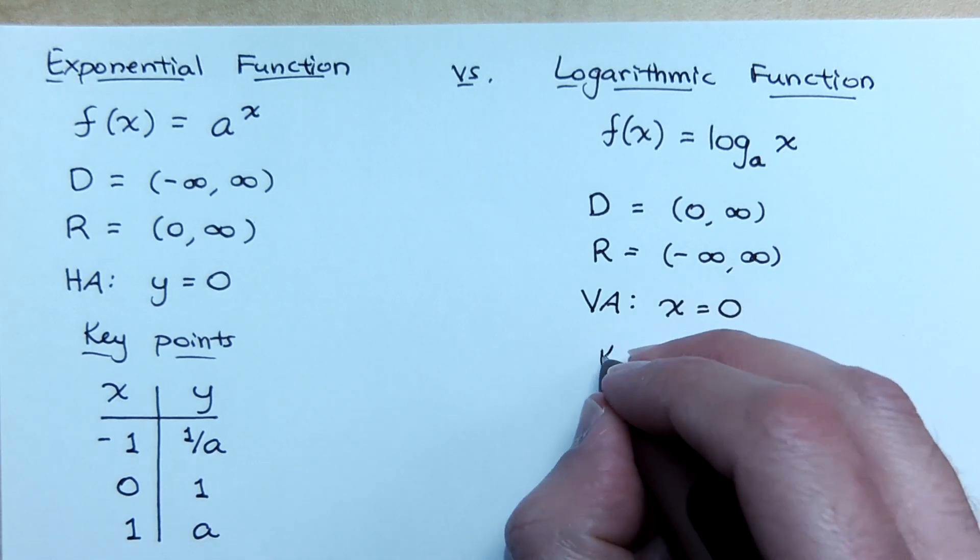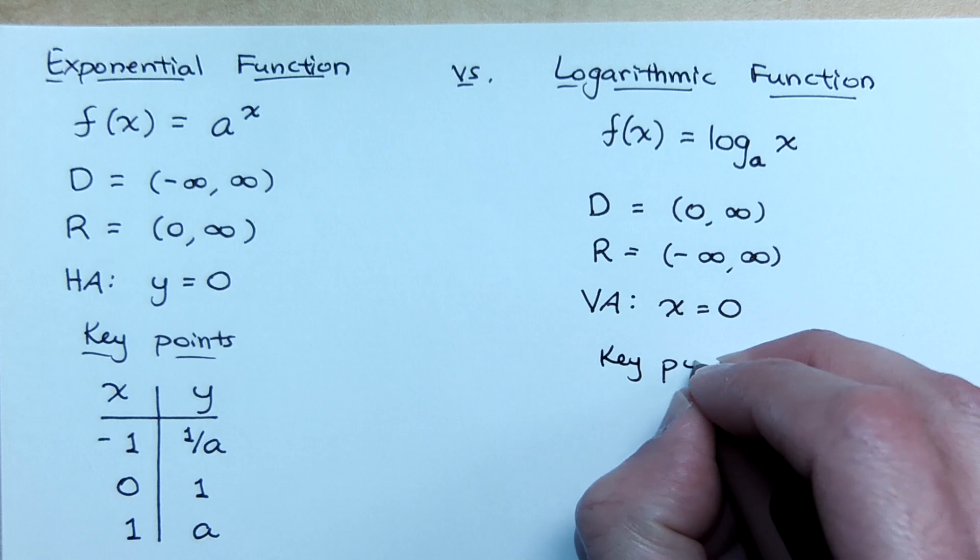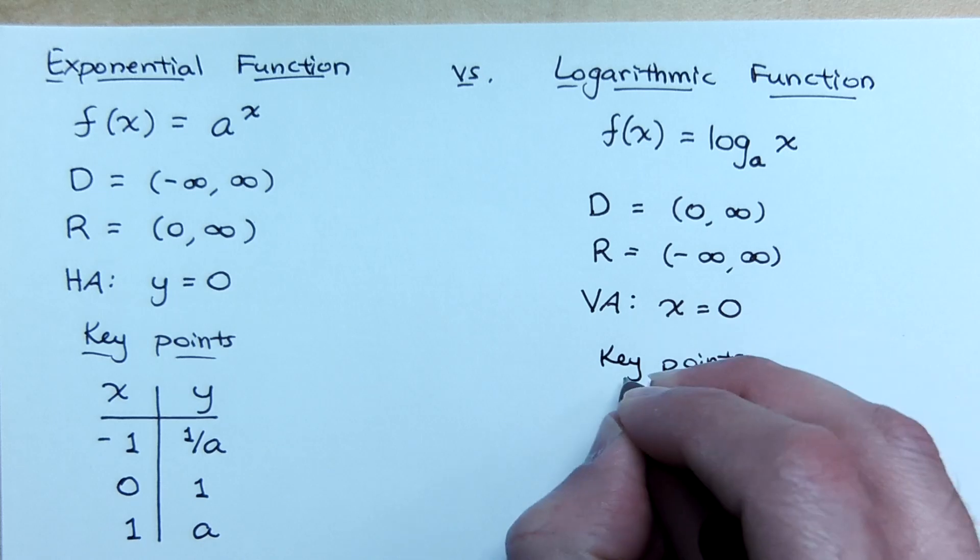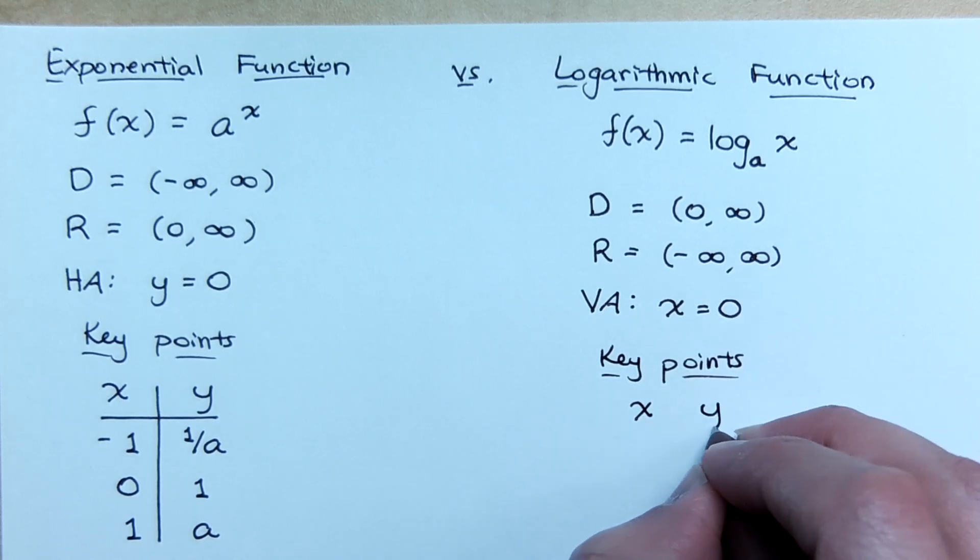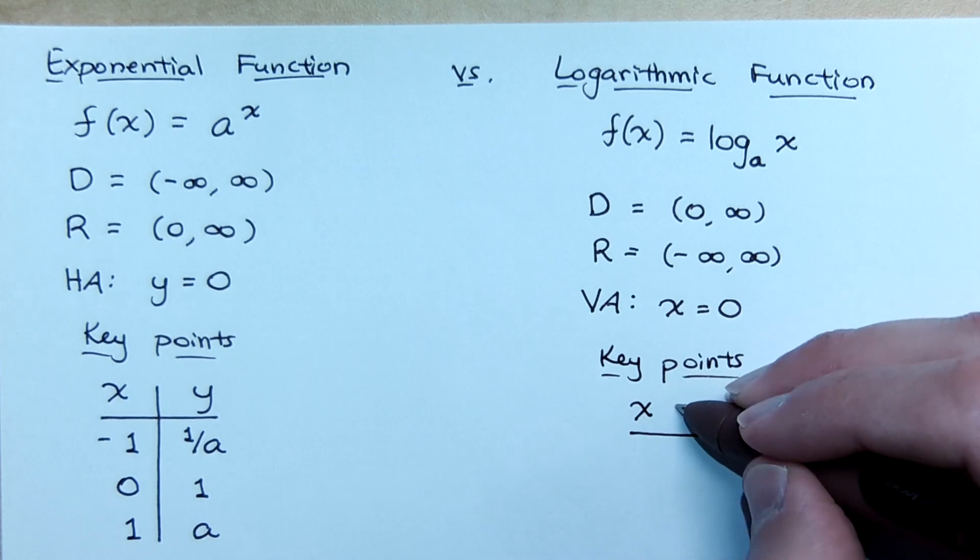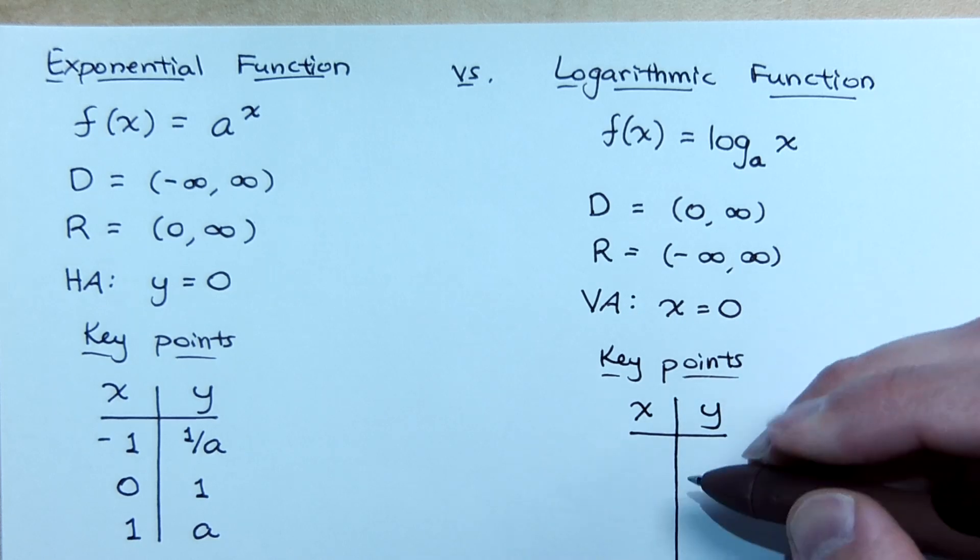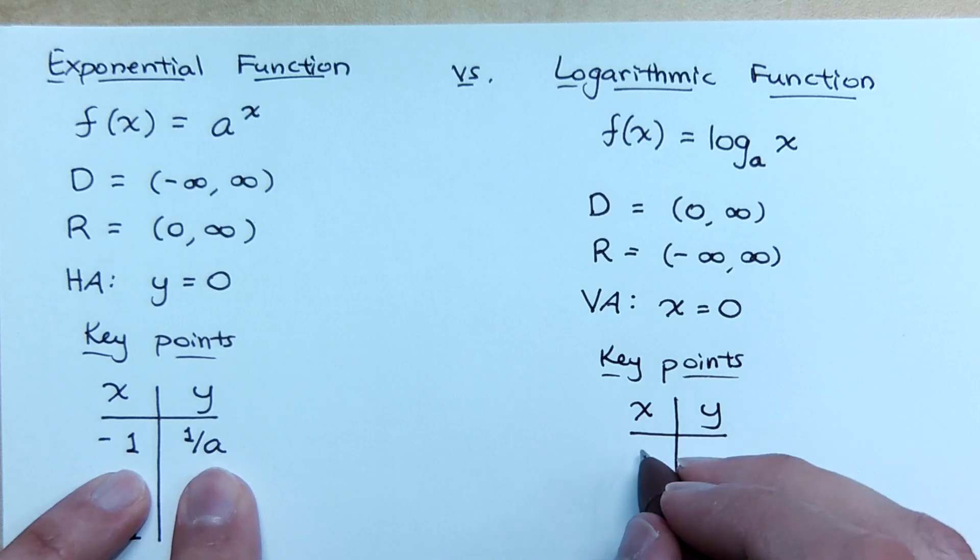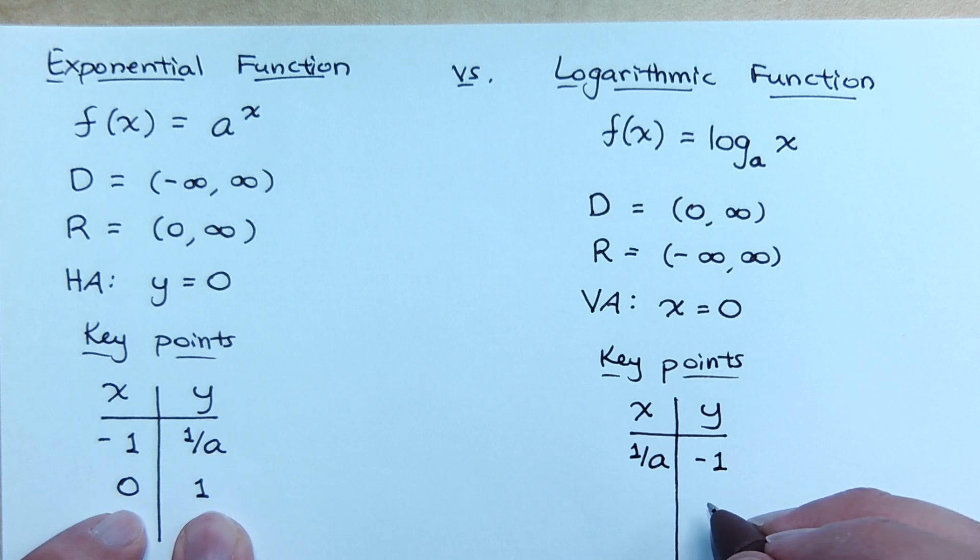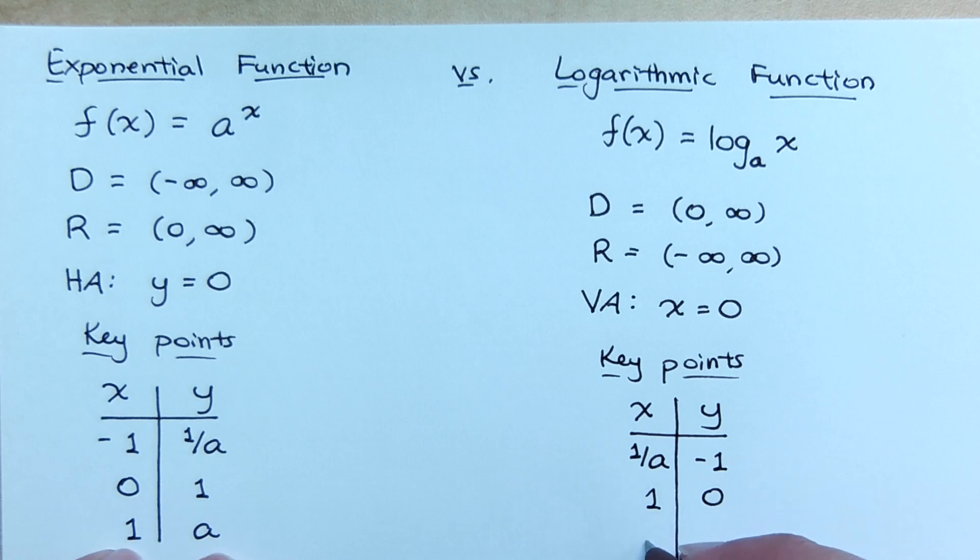Talk to me about what your key points would be for the inverse. One over a and negative one. Right. So you take these ordered pairs and you just flip them around. So one over a would correspond to negative one. Instead of zero, one, you have what? One, zero. You have one, zero. And instead of one a, you have a one.